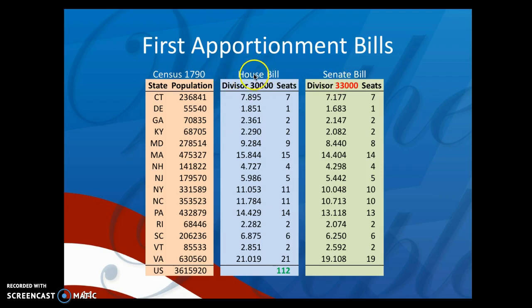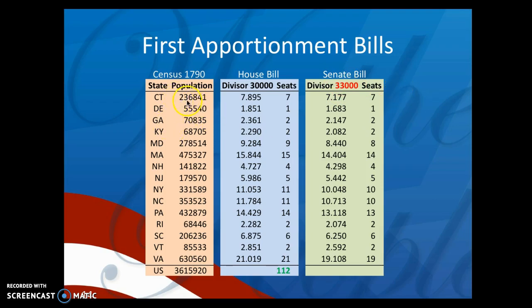California has 53 House of Representatives members; Alaska has one. The Senate proposed dividing each state's population by 33,000 instead of 30,000 — so Connecticut divided by 33,000 gives 7.188. Then, dropping the decimals, they got 105 as their Senate bill.